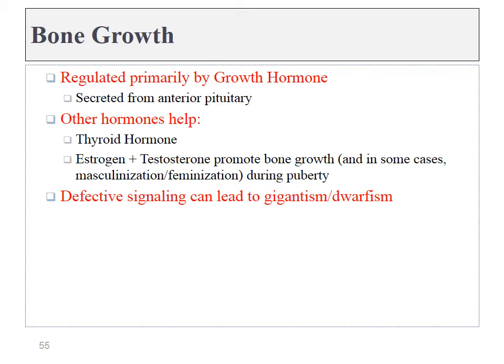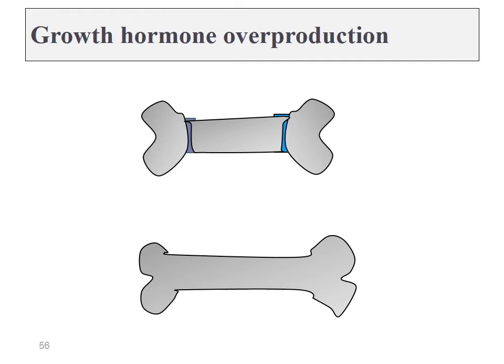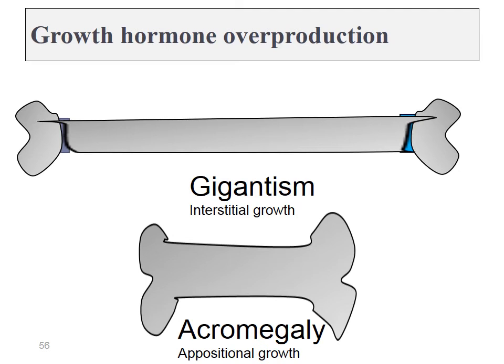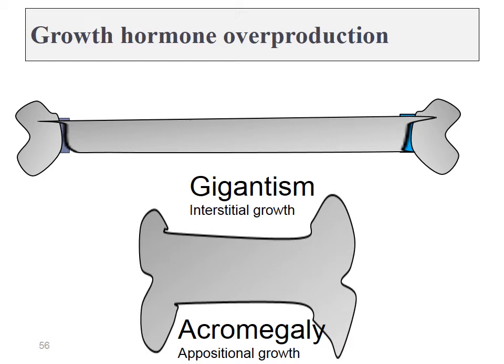Defects in growth hormone can lead to gigantism or dwarfism. The overproduction of growth hormone prior to puberty leads to gigantism, causing the epiphyseal plates to grow too much, leading to an increase in size of the long bones. Growth hormone also increases the growth of most other organs. When this hormone is overproduced after puberty, because there are no epiphyseal plates to grow from, the long bones can only increase in size from appositional growth — adding layers to the outer edges. This leads to a condition called acromegaly, where bones grow too thick, most noticeable in fine bone structures such as the hands and certain facial features.